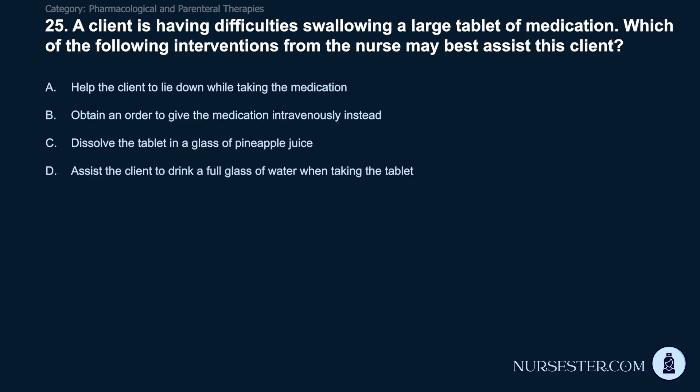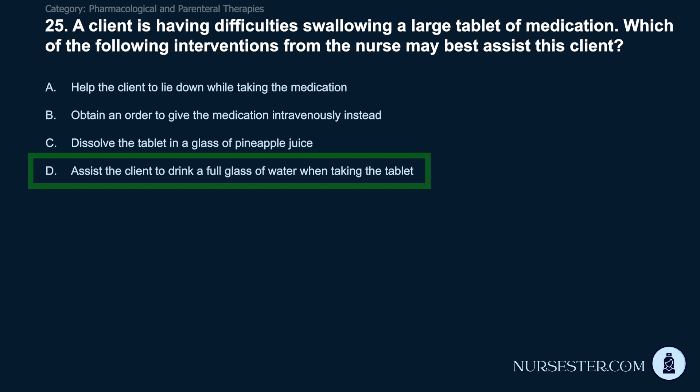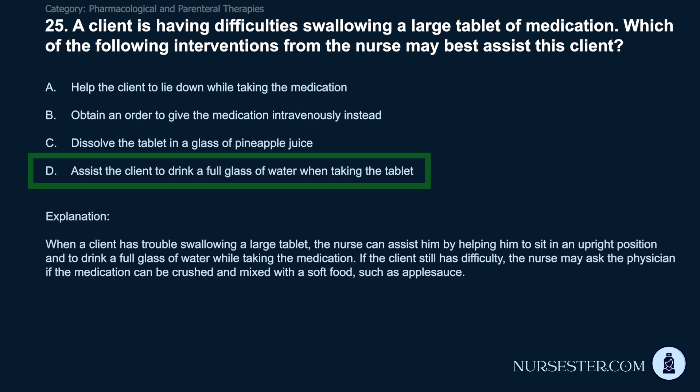Question 25: A client has difficulty swallowing a large tablet of medication. Which intervention may best assist this client? A) Help the client lie down while taking the medication. B) Obtain an order to give the medication intravenously instead. C) Dissolve the tablet in a glass of pineapple juice. D) Assist the client to drink a full glass of water when taking the tablet. Correct answer: D. Assist the client to drink a full glass of water. The nurse can help by assisting the client to sit upright and drink a full glass of water. If the client still has difficulty, the nurse may ask if the medication can be crushed and mixed with a soft food such as applesauce.